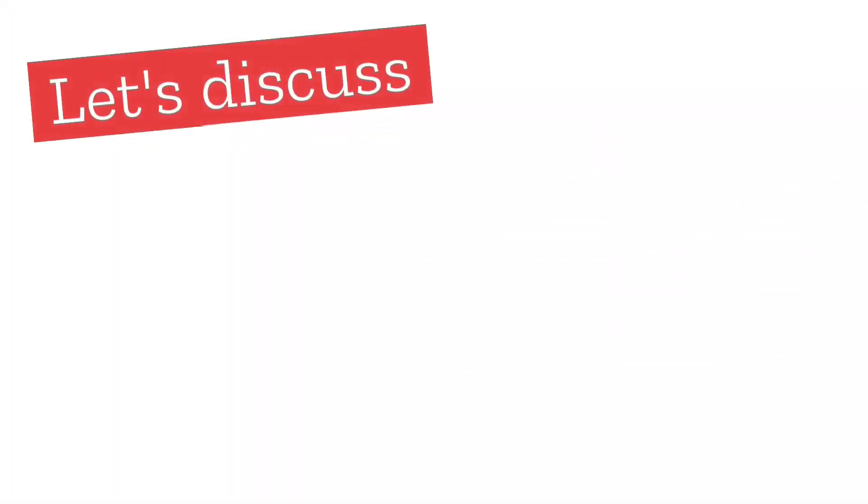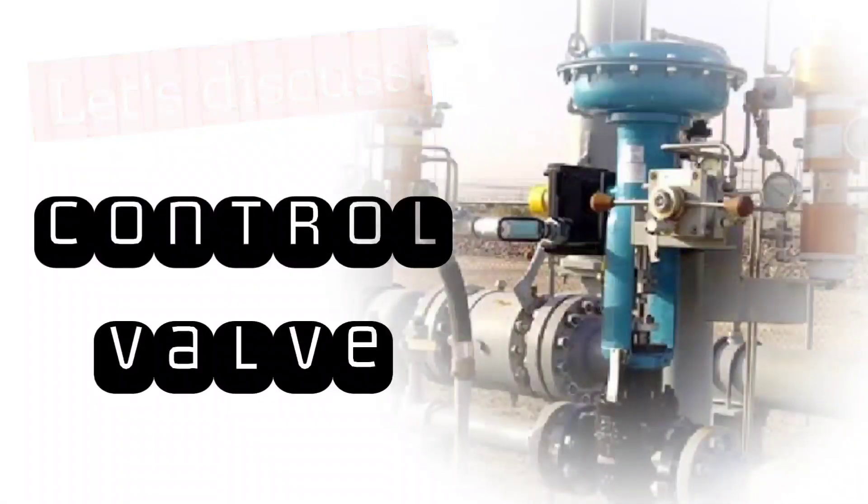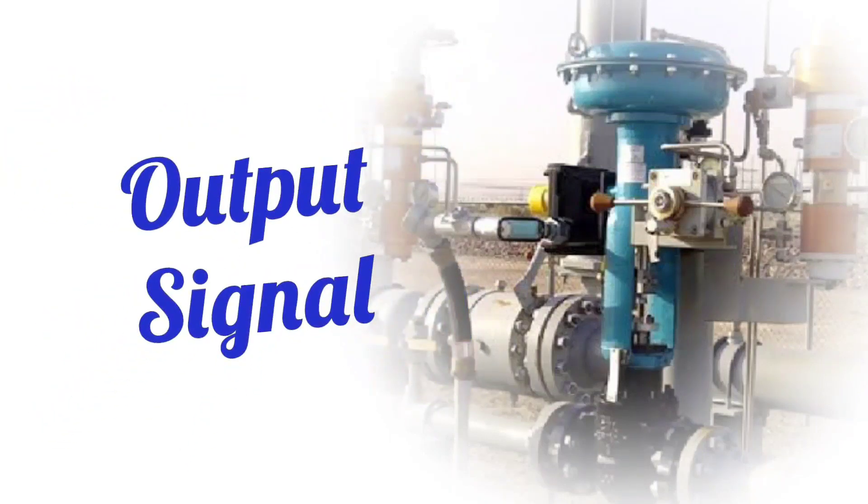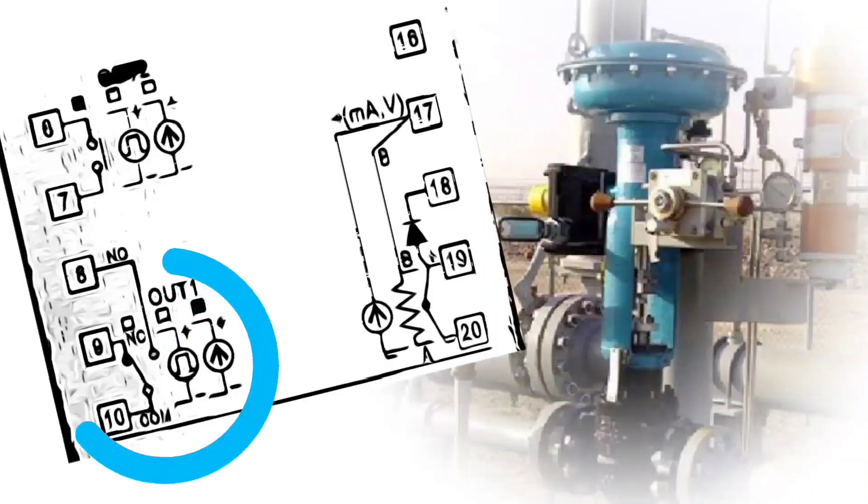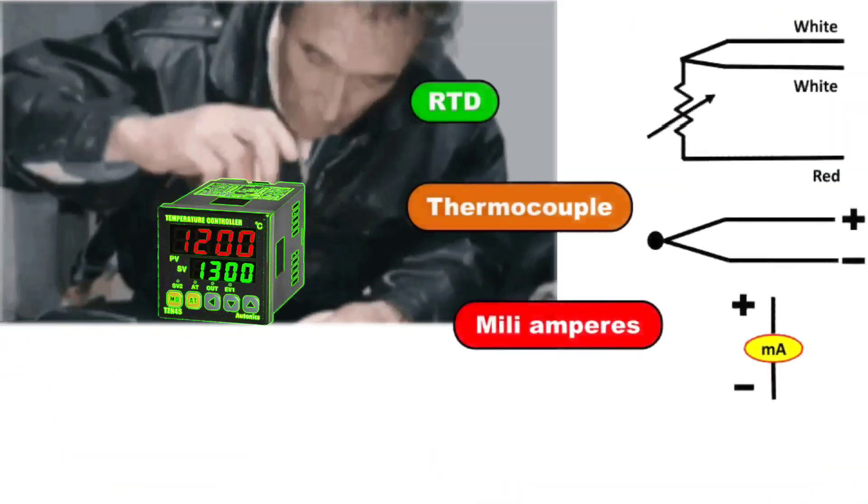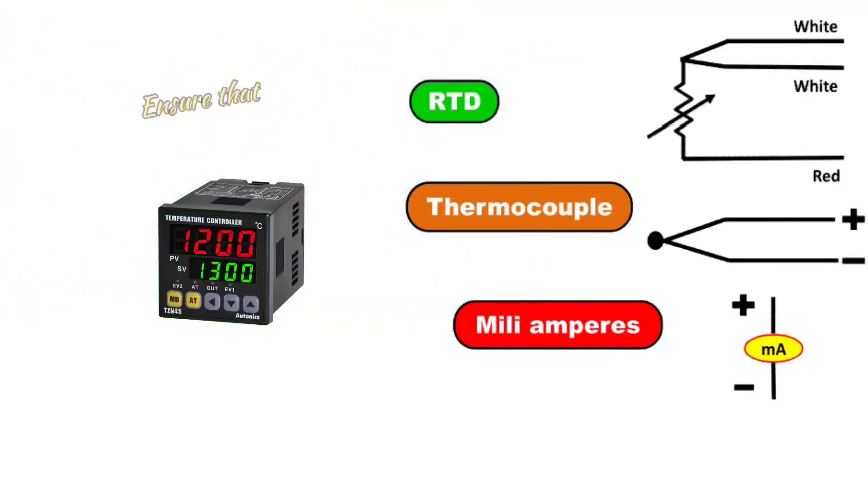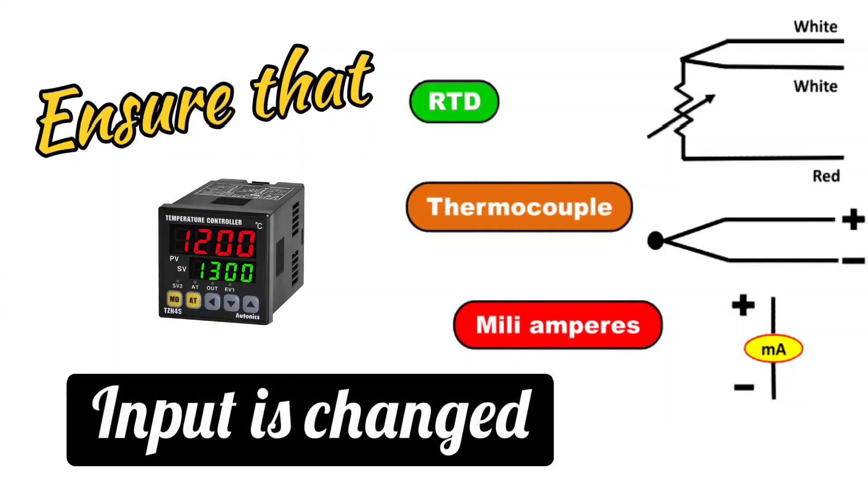Now let's discuss about control valves. The signal of the control valve is the output signal, and this will be connected to the output in PID controller. Before connecting signal, we ensure that input has been changed accordingly.